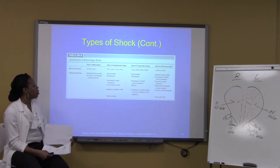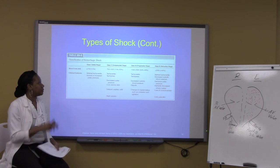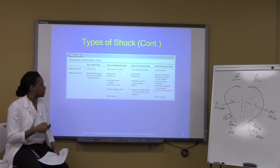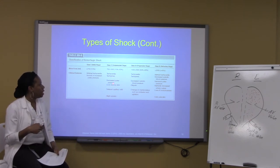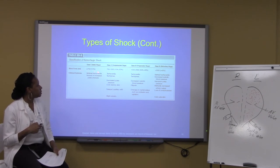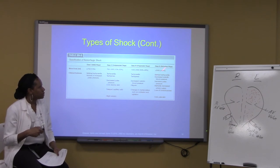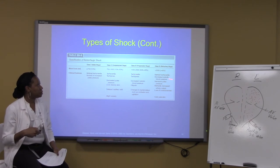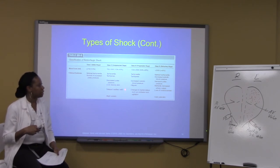A chart in the book covers the different stages of hemorrhagic shock and their classifications as far as signs and symptoms. Make sure you go over this chart: blood loss less than 750 mL for the initial stage, then the compensated stage, the progressive stage, and the refractory stage. Make sure you know all the clinical features for each of these stages.